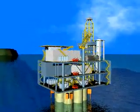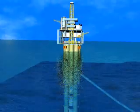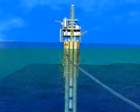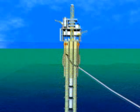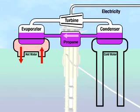OTEC uses this continuously renewing energy to generate electricity without oil, coal, natural gas, or any other fuel. OTEC only needs the temperature difference between the hot surface water and cold deep water of the ocean. Ocean Thermal Electric Conversion takes the hot surface water and uses it to boil another liquid, like propane, which has a very low boiling point — the temperature at which a liquid becomes a gas.